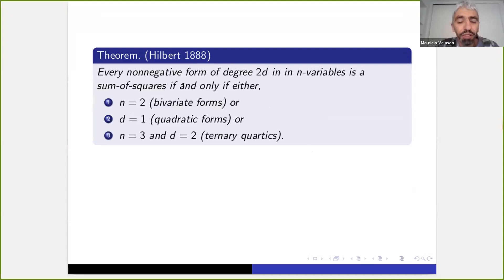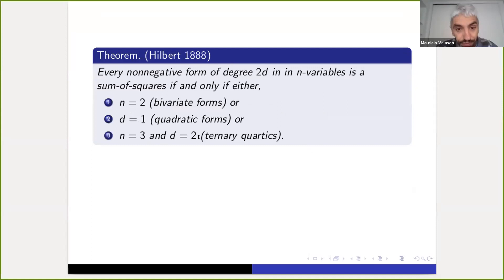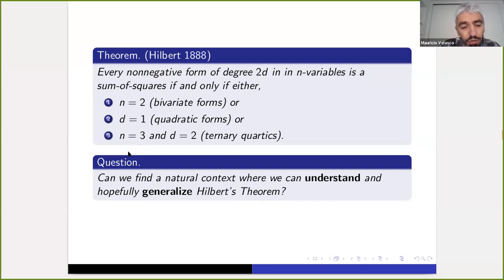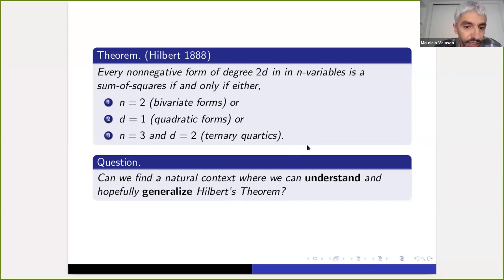Every non-negative form of degree 2D in n variables is a sum of squares if and only if either n equals 2 (bivariate forms in any degree), or d equals 1 (quadratic forms in any number of variables), or in the exceptional case of ternary quartics. This was the starting point for our investigation — we asked whether we can find a natural context providing a geometric explanation for Hilbert's theorem, and hopefully generalize it to other situations.